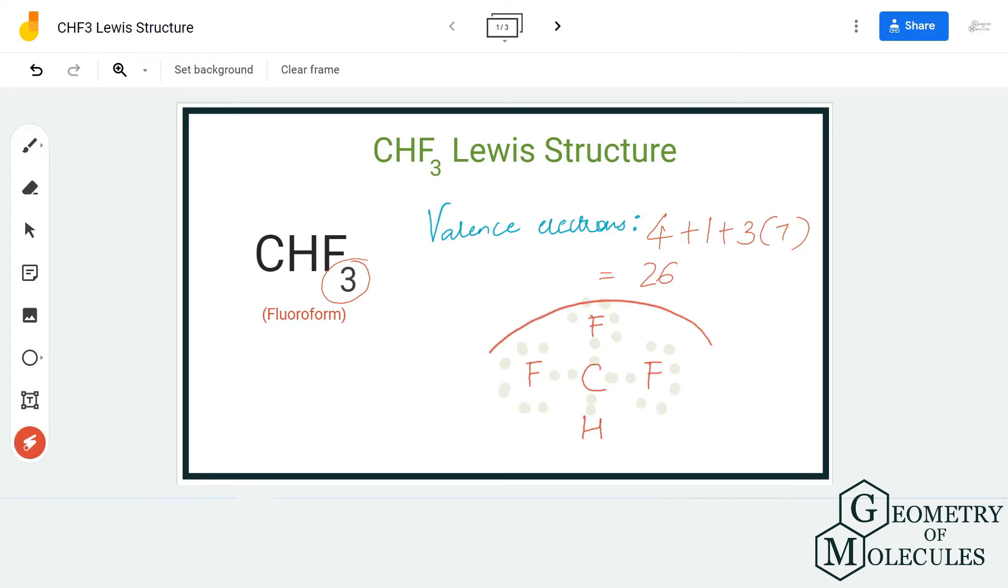Once you have done that, we will be using up all 26 valence electrons, which means we have complete octets for all atoms. The carbon atom has eight valence electrons in its outer shell. The hydrogen atom has two electrons in its outer shell, and each fluorine atom has eight valence electrons.